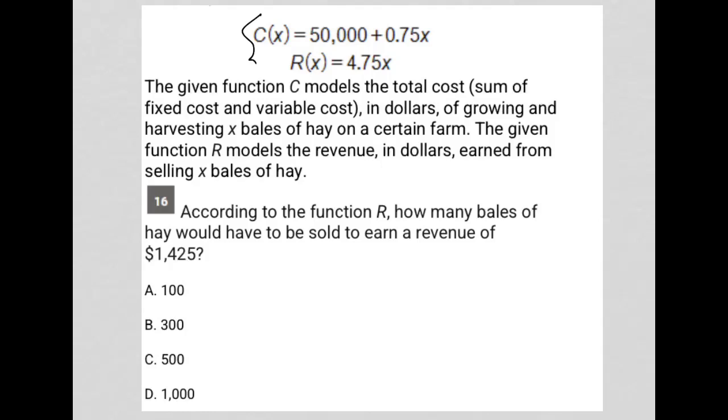So, this question starts off by telling us that C of x equals 50,000 plus 0.75x and R of x equals 4.75x. I have no idea what that means yet, so we have to read the question.